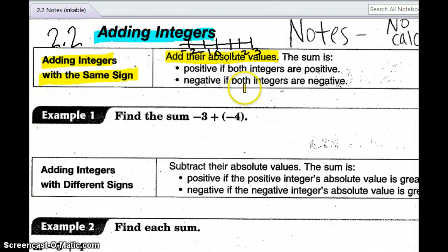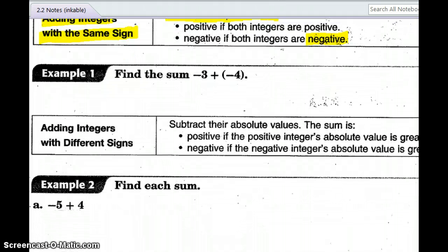If they're both positive, then no big deal. We're just going to add the numbers like we're used to doing. If they're both negative, then we're going to add them, but keep the negative.